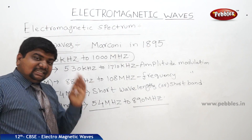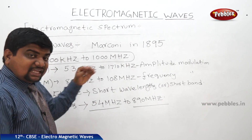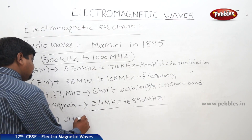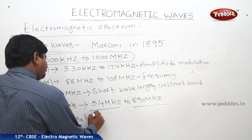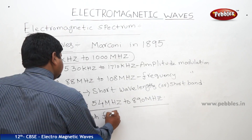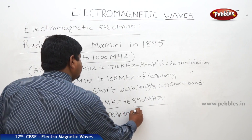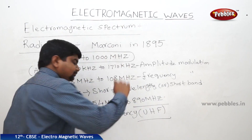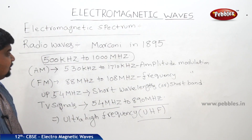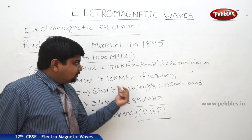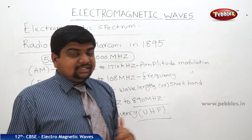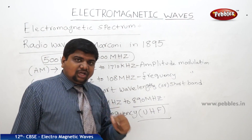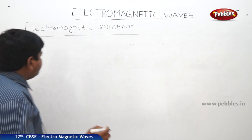Cell phone signals are also radio waves, but they operate at ultra high frequency — UHF. The uses of radio waves include TV signal transmission, radio signal transmission, and cell phone signal transmission.